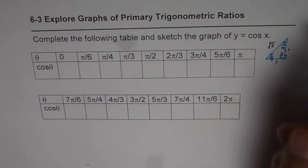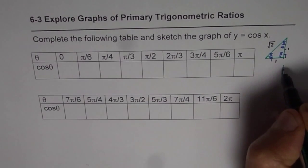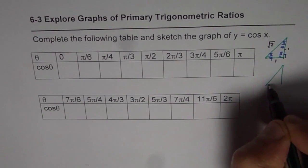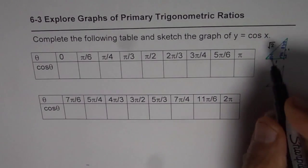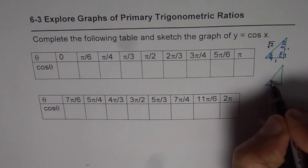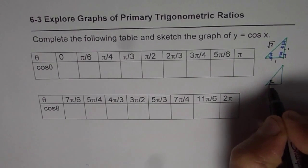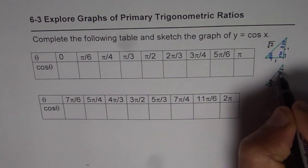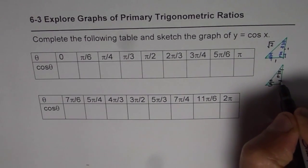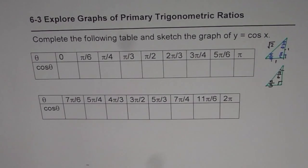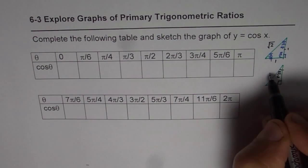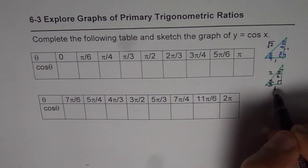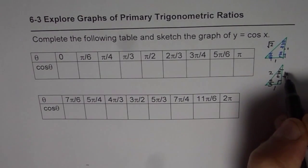The second triangle of interest is the 30-60-90 triangle, which we will call pi by 6, pi by 3, and pi by 2 in radians. If you take an equilateral triangle of sides 2, half of 2 is 1, and the remaining side is the square root of 2 squared minus 1 squared, which gives square root of 3.